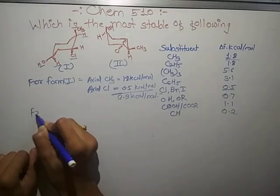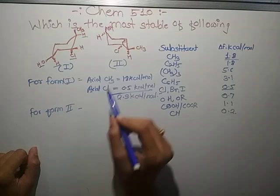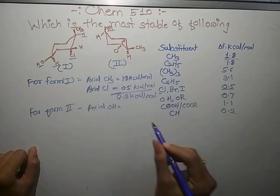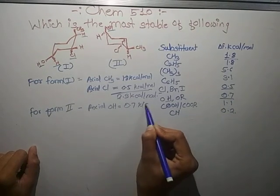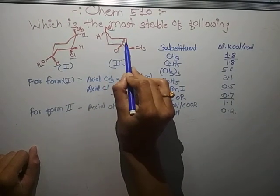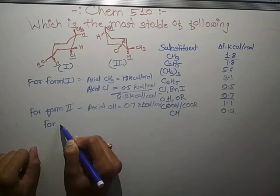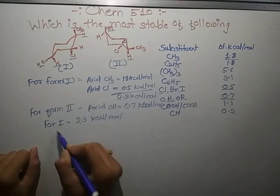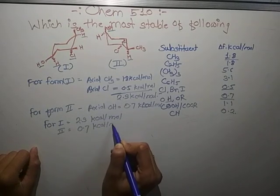Now for Form II, axial Cl is 0.5 kcal/mol. Here axial H is present with 0 value. So for Form I, 2.3 kcal/mol, and for Form II, 0.5 kcal/mol.